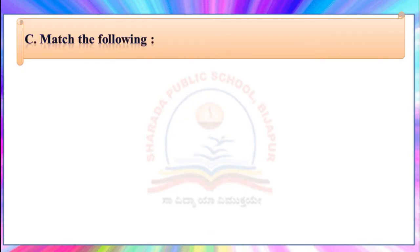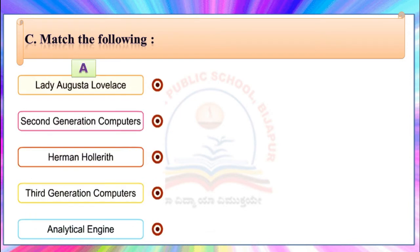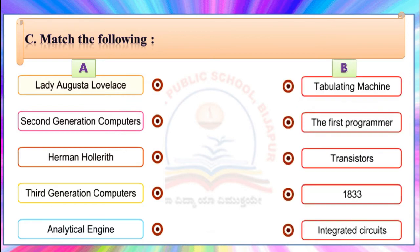C. Match the following. This activity is based on chapter number 1, Evolution of Computers. You have to match column A with column B with the respective answers. Let us read the column A questions: Lady Augusta Lovelace, 2nd generation computers, Herman Hollerith, 3rd generation computers, Analytical Engine. Column B answers: Tabulating machine, the first programmer, transistors, 1833, integrated circuits. Children, let us solve the activities now.